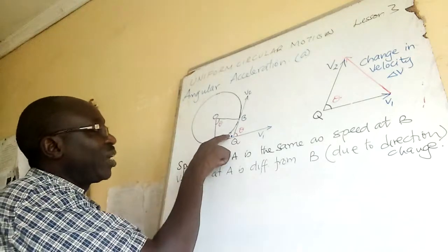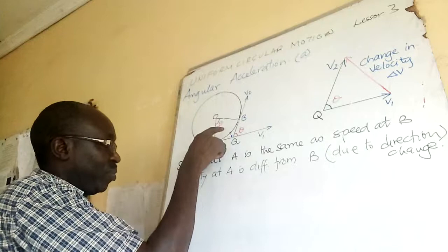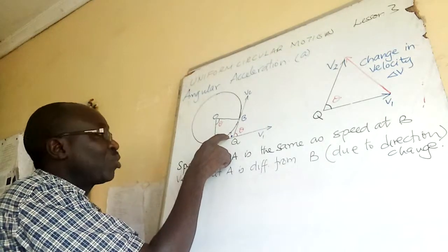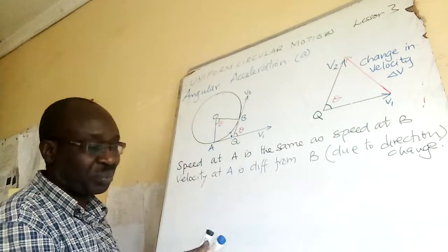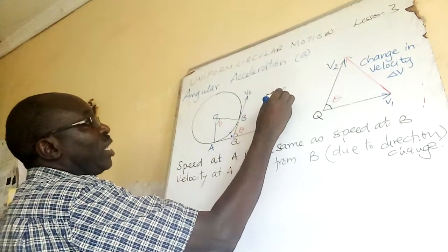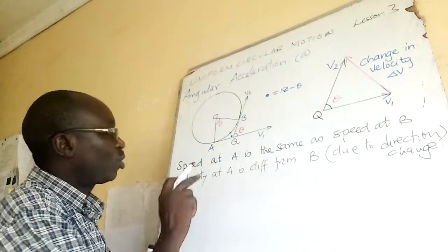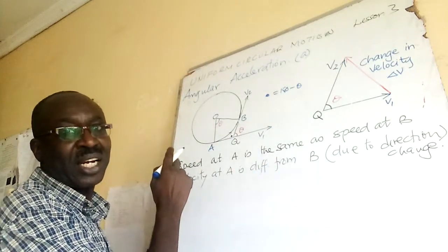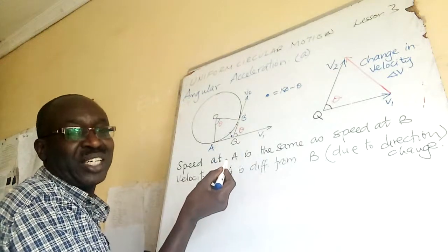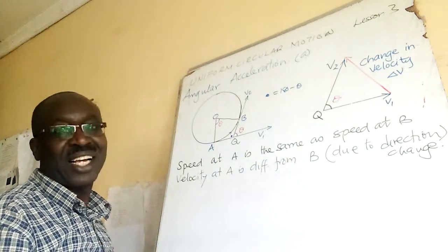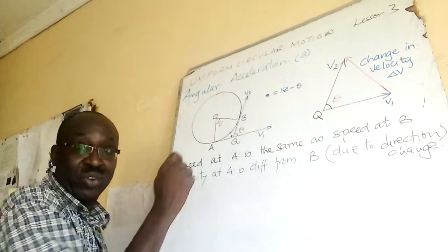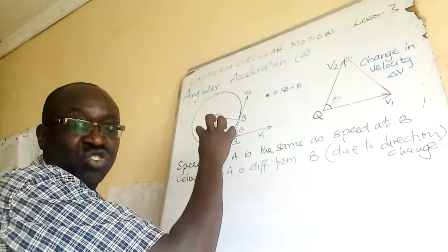This angle is 180 minus theta. Using angles on a straight line: 180 minus theta, and if you add theta you get 180. So this angle here is theta. Now extract this — it is angle theta.